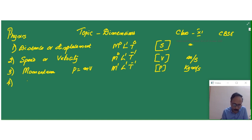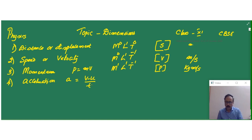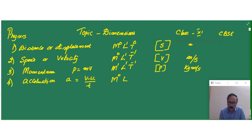Now acceleration. Acceleration is nothing but the rate of change of velocity. So velocity dimensions should be written in the numerator and time dimension should be written in the denominator. As there is no mass term, velocity dimensions are L T-1, and one more T is in the denominator. Therefore it is L T-2. The SI unit is meter per second square.